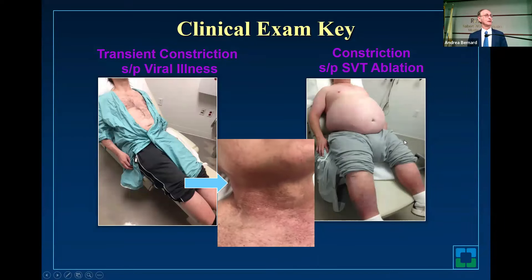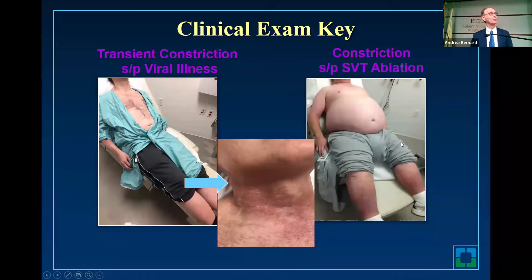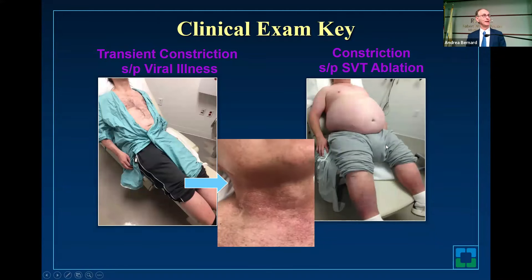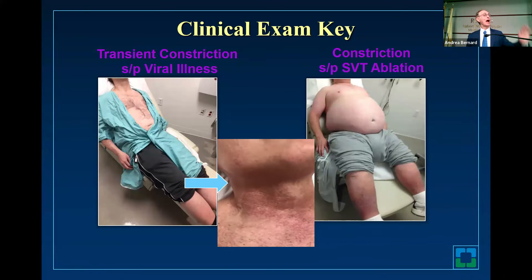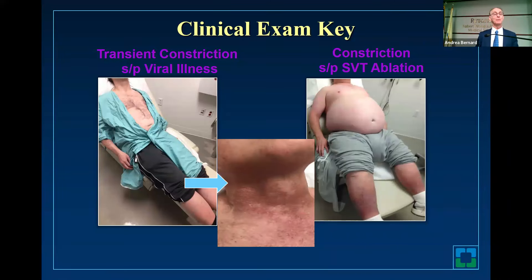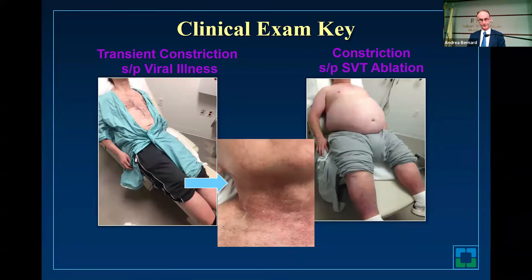For the fellows in the audience — how would you examine this patient? What angle would you want to see the JVD at? You would have to almost make them stand or sit, because they'll be so elevated that you won't see the top of the column. So it's very important to examine the patient.